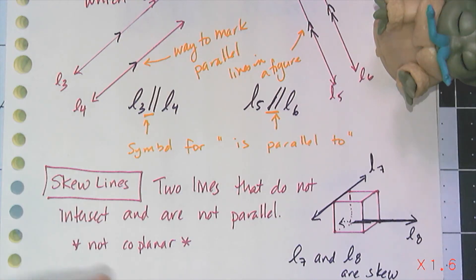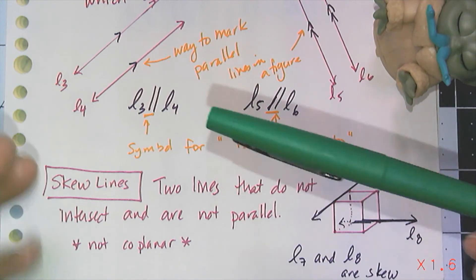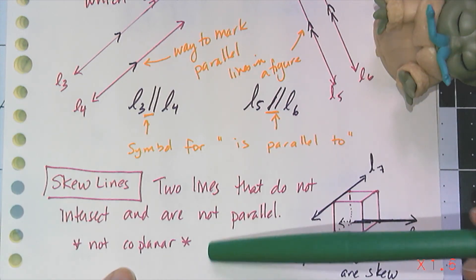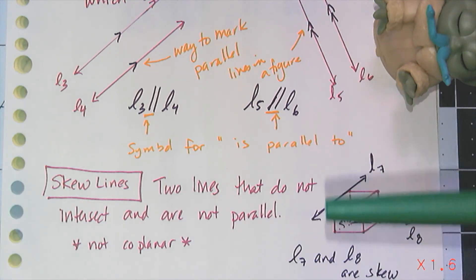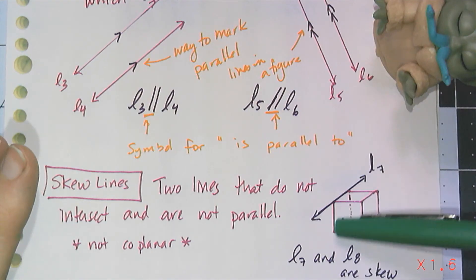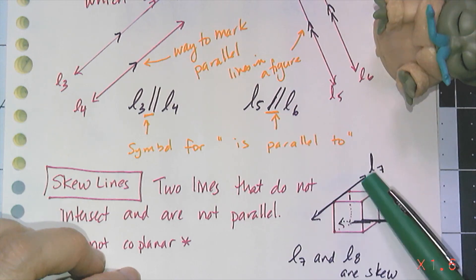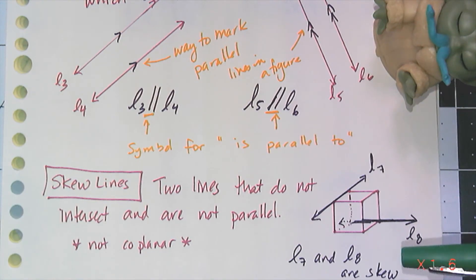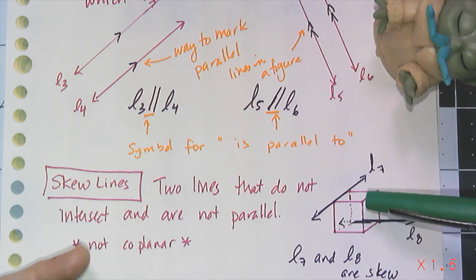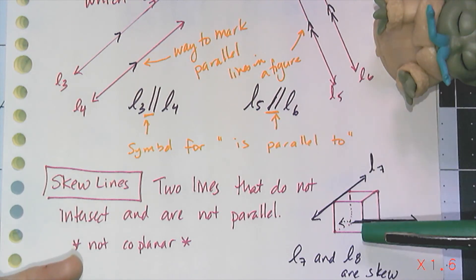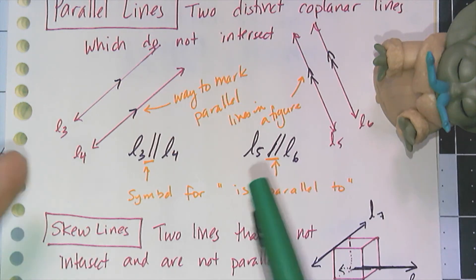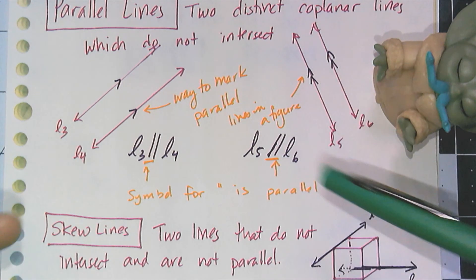Now let's talk about how important the word 'coplanar' is to the definition of parallel lines. There is a different set of lines in geometry that never intersect each other but are not parallel — because they're not coplanar. Those are called skew lines, which is a three-dimensional concept. Looking at a cube, the upper right edge and the back flat edge are lines that will never intersect, but they're not parallel because they're not coplanar — instead they are skew lines. Parallel lines must be coplanar; skew lines cannot be coplanar.